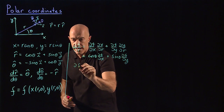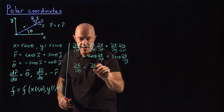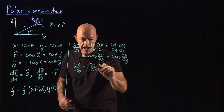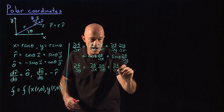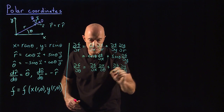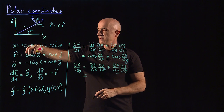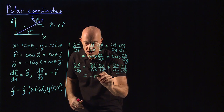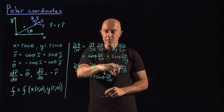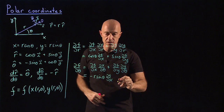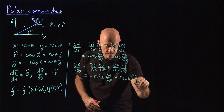The partial of f with respect to theta, by applying the chain rule, is partial f partial x times partial x partial theta, plus partial f partial y times partial y partial theta. Partial of x with respect to theta is minus r sine theta, so we get minus r sine theta times partial f partial x. And partial of y with respect to theta is r cosine theta, so plus r cosine theta times partial f partial y.